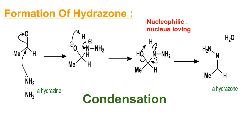The pi electrons collapse onto the oxygen giving it a negative charge, while nitrogen gains a positive charge as it now forms four bonds. A proton exchange occurs within the molecule — the negatively charged oxygen attacks the proton on nitrogen, giving nitrogen back its electrons. Hydrazine is more nucleophilic than a regular amine due to the presence of two adjacent nitrogen atoms. It attacks the former carbonyl carbon and kicks out the hydroxy group, then extracts a hydrogen from nitrogen, forming a neutral intermediate — the hydrazone.